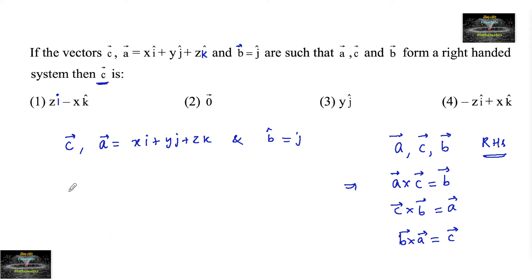Since we require the vector c, let us consider c equals b cross a. We will take i j k, b vector is 0 1 0 and a vector can be taken as x y z.